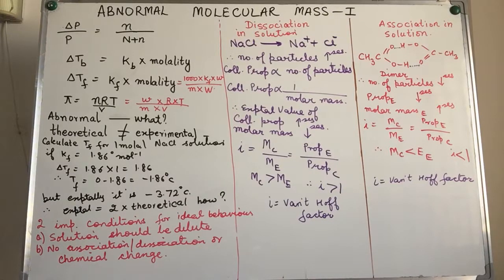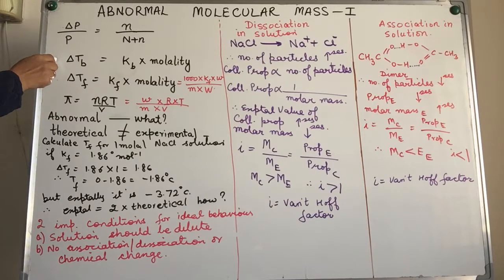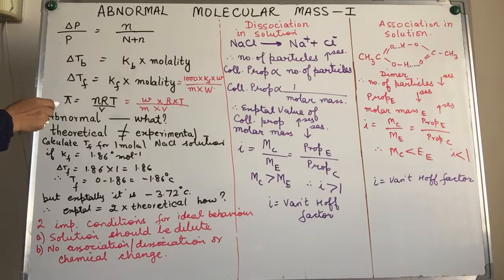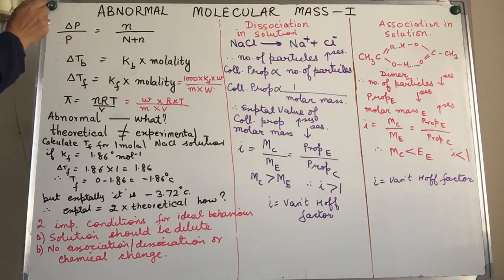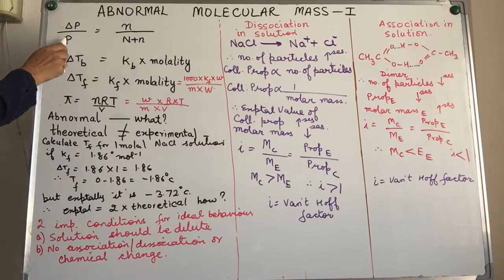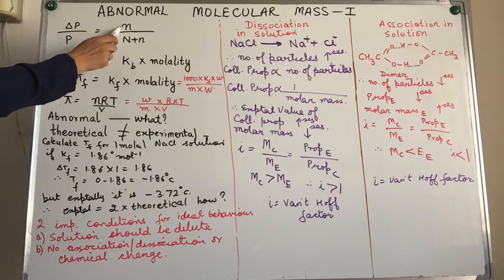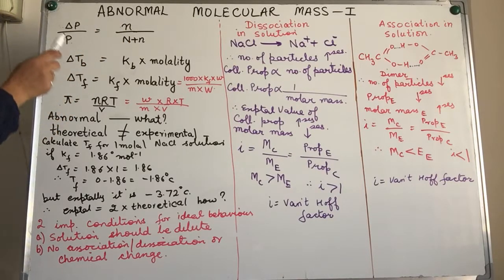Welcome to the first part of the video on abnormal molecular masses. This is in continuity of the earlier video related to colligative properties. A quick recollection: colligative properties include depression in freezing point, elevation in boiling point, osmotic pressure, and relative lowering of vapor pressure. These four properties have been studied in four different videos. These properties are dependent on the number of particles in solution — the number of solute particles. Lowering of vapor pressure is proportional to the number of moles of the solute.